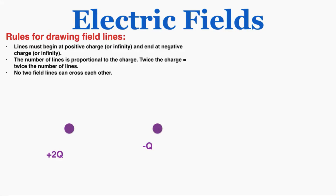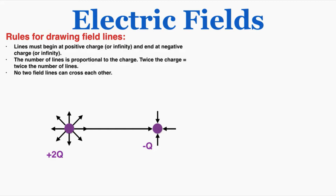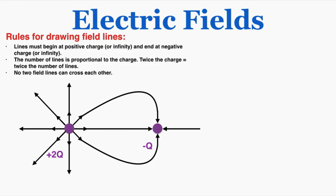Now with one charge doubled — positive 2Q and negative Q — I'll use 8 lines for the larger charge and 4 for the smaller. A positive charge placed near those adjacent field lines would feel a much greater push from the 2Q than attraction from the negative Q, so it experiences the push away for much longer before curving toward the negative charge. The remaining lines go off to infinity.